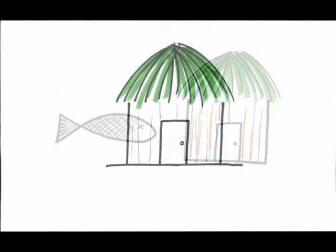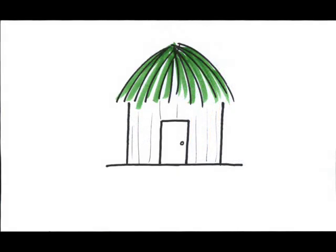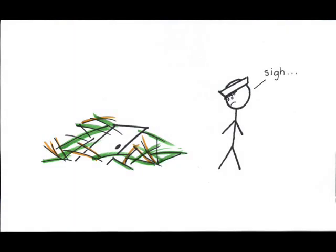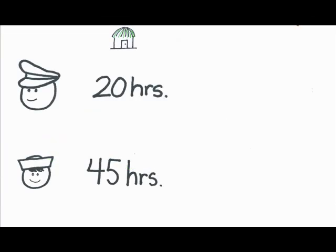To build a single hut—framing it, adding walls, thatching the roof—Skipper needs 20 hours. Gilligan, on the other hand, is not very competent. He tends to knock the hut over a time or two before completion and takes 45 hours to finish a hut.